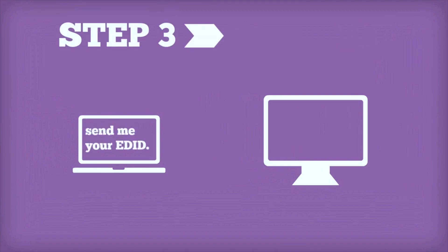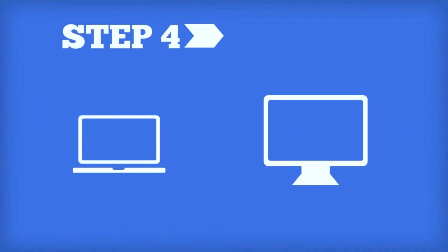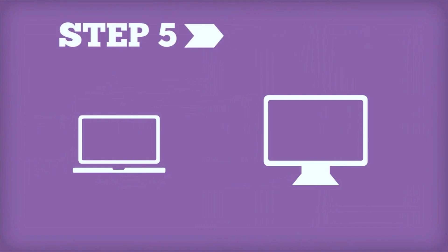The source then sends a command to the sync for its EDID information. The sync device then transmits its EDID information to the source. Finally, completing the handshake, the source sends the sync its content and its preferred resolution, refresh rate, and color space.